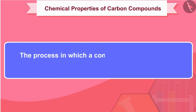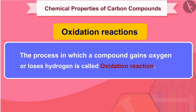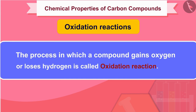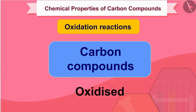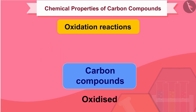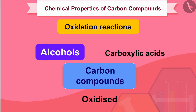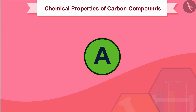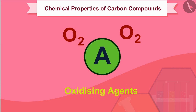The process in which a compound gains oxygen or loses hydrogen is called an oxidation reaction. Carbon compounds can be easily oxidized on combustion. In addition to this complete oxidation, we have reactions in which alcohols are converted to carboxylic acids. Some substances are capable of adding oxygen to others — these substances are known as oxidizing agents.